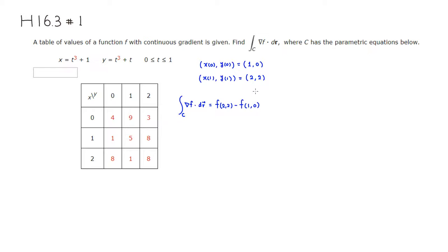These values can be found in the table. At (2, 2), you can see that the value is 8. So you have 8 minus f(1, 0). The value at (1, 0) is 1. So therefore, the value is going to be 7.